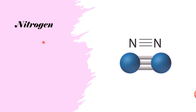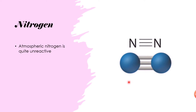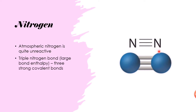Starting with the properties of nitrogen: atmospheric nitrogen is quite unreactive, found in the atmosphere as the gas N₂. This is because of the triple nitrogen bond — three very strong covalent bonds between the two nitrogen atoms — meaning it has a large bond enthalpy because it needs a lot of energy to overcome these strong covalent bonds.